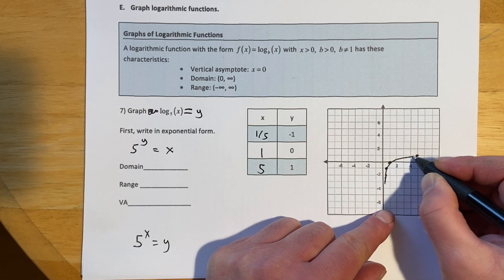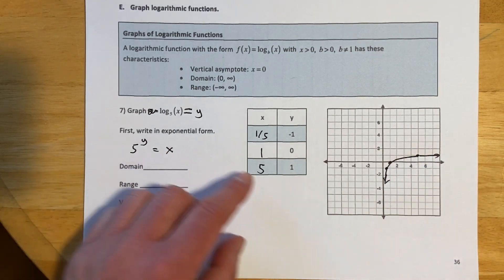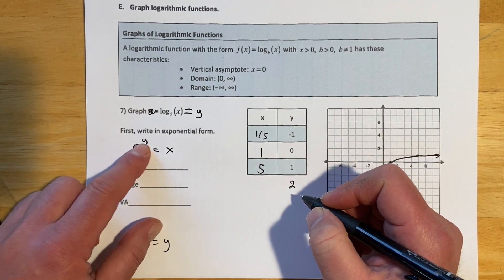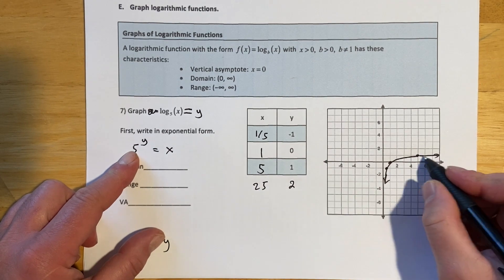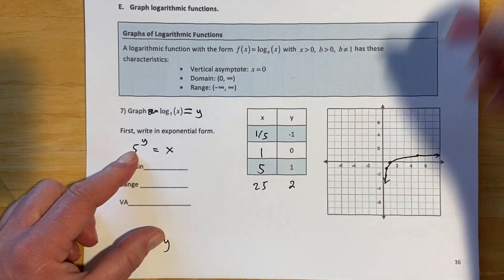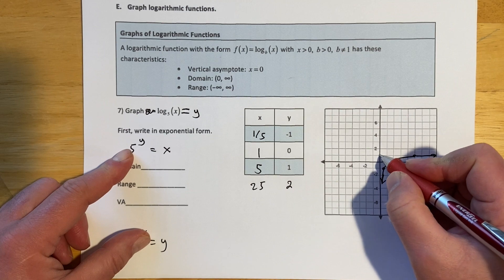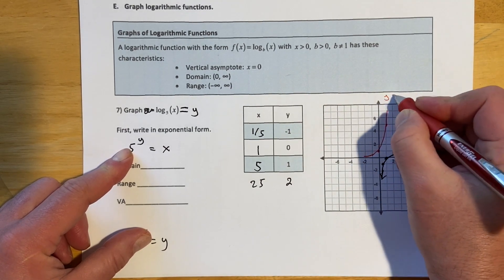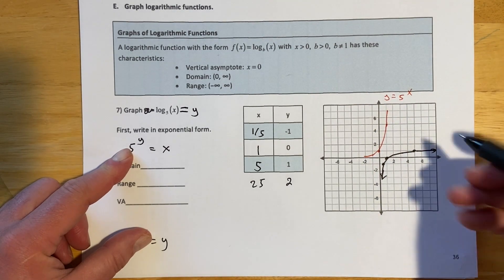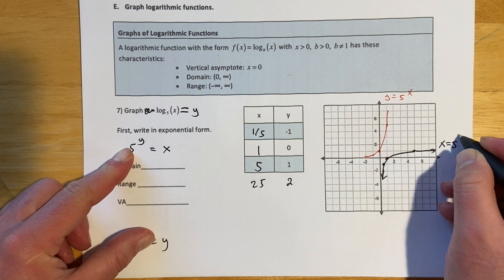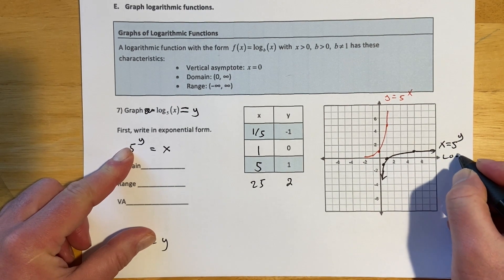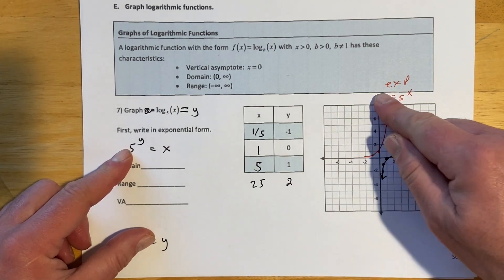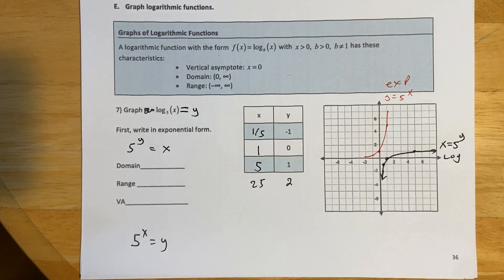A basic log graph is a very slow-growing curve. To go up one more unit to y = 2, I'd need to put in x = 25. Exponentials grow really fast; logs grow really slowly — they're inverse to each other. Tossing in y = 5^x as reference: that's the exponential growing super fast, and x = 5^y (the log) growing super slow.